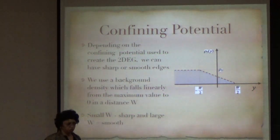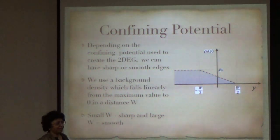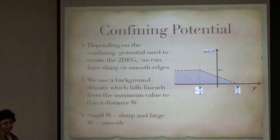W is measured in units of magnetic length. Actually I will be using W by L, and this is something which can be done experimentally, because since at least for the 2DEGs, it is all done by gating, they can gate this so that they can make a smooth edge or a sharp edge.